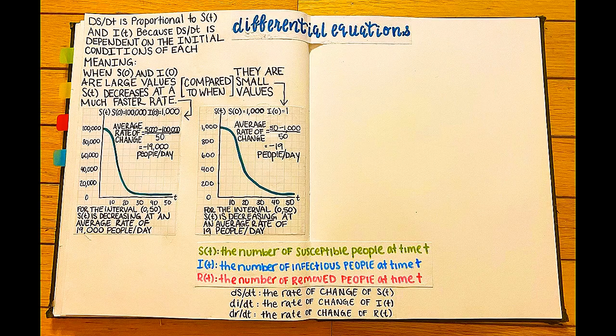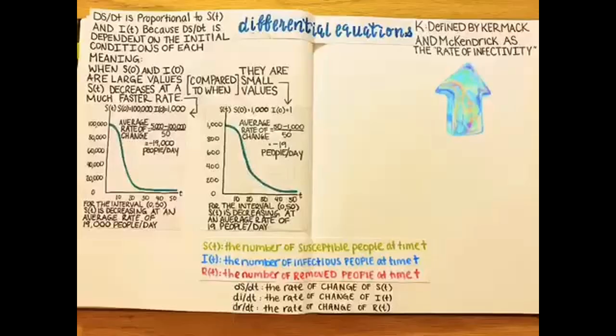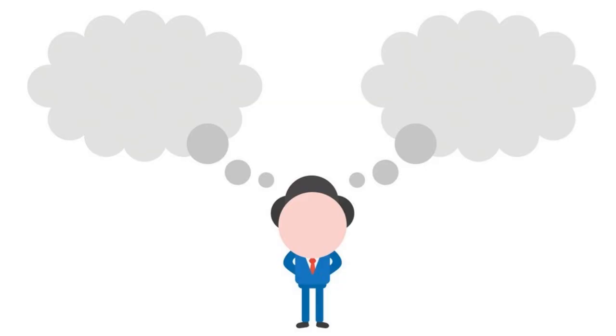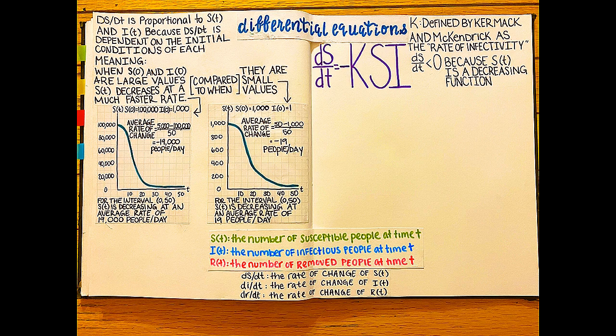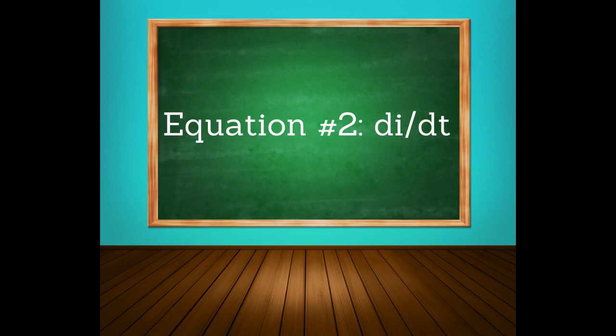The first differential equation, ds/dt, is proportional to s(t) and i(t). In order to write an equation where this is true, we must introduce the parameter k and then multiply s(t), i(t), and k. Keeping in mind that s(t), i(t), and k are always positive values and that ds/dt must be less than 0, then ds/dt equals negative k times s times i.